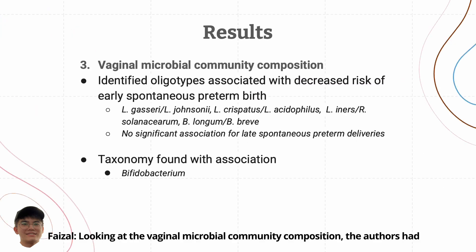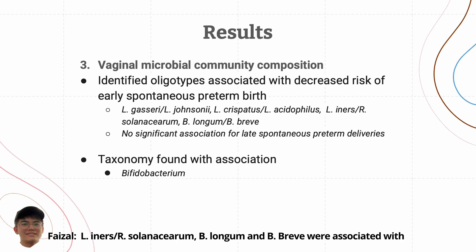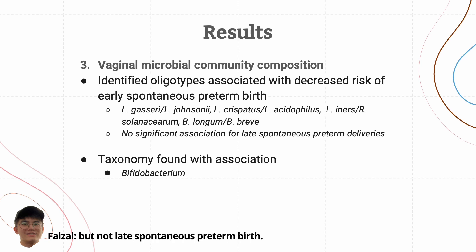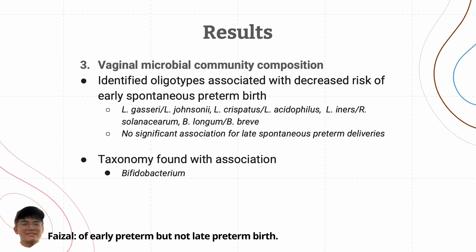Looking at the vaginal microbiome community composition, the authors compared the relative abundance of microbes presented as oligotypes for early and late preterm versus term deliveries. They found that L. gasseri, L. johnsonii, L. crispatus, L. acidophilus, L. inus, L. reuteri solanacearum, B. longum, and B. breve were associated with a decreased risk of early spontaneous preterm birth but not late spontaneous preterm birth. Out of all of these, the only significant difference in vaginal microbiome taxonomy was Bifidobacterium, which was found to be associated with decreased risk of early preterm but not late preterm birth.